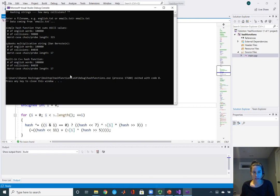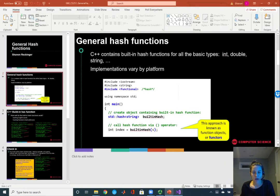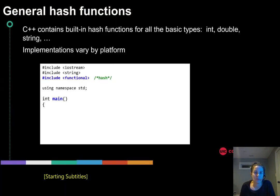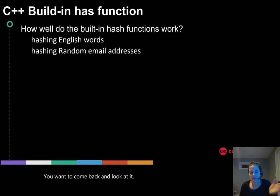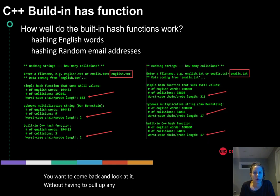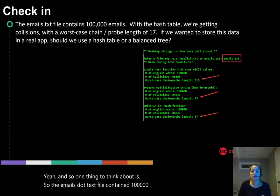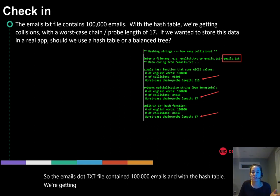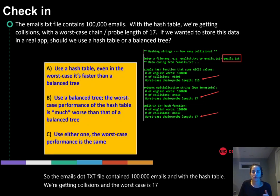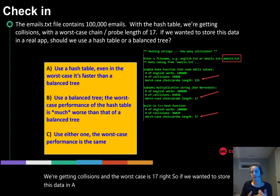In my slides here I basically just summarize what I just showed you in the demo. One thing to think about is: the emails.txt file contained 100,000 emails, and with the hash table we're getting collisions with a worst case of 17. If we wanted to store this data in a real app, should we use this hash table or would a balanced tree be better?